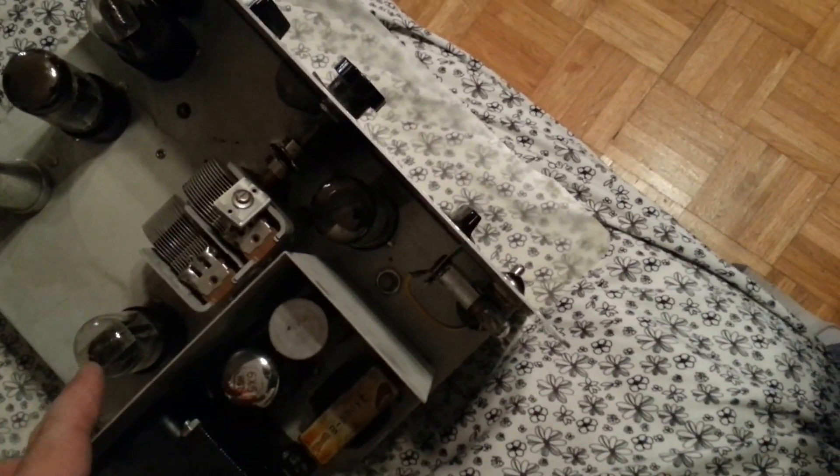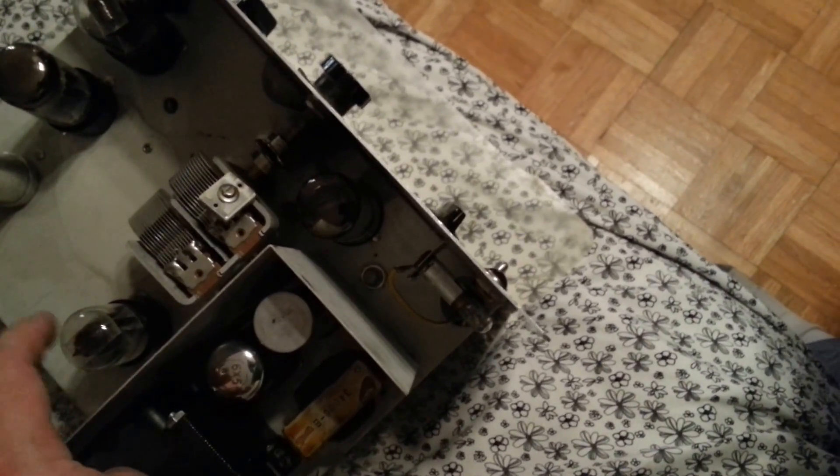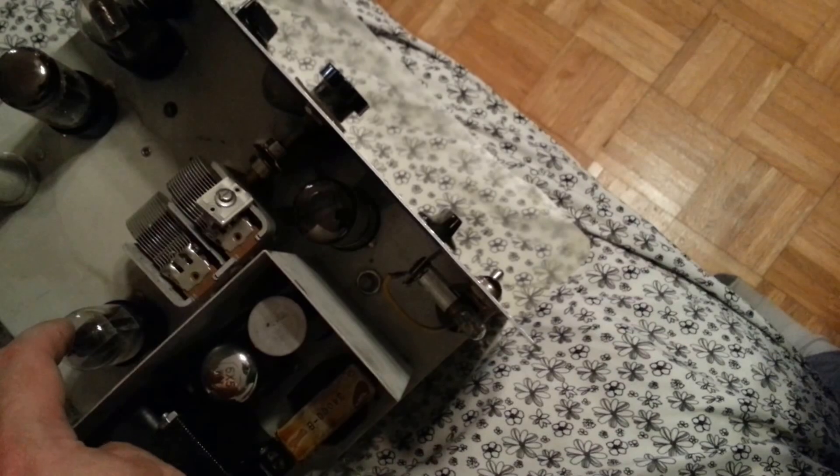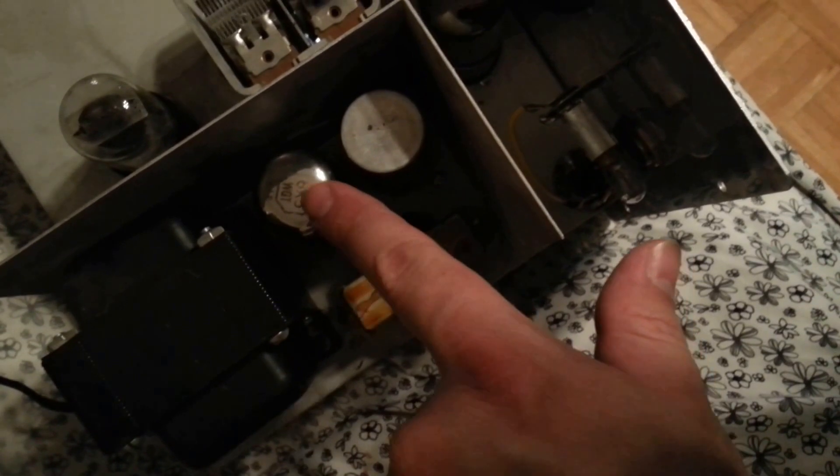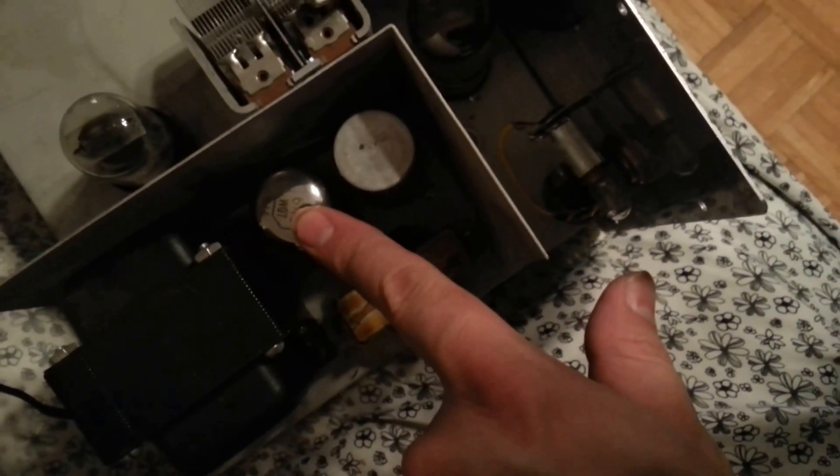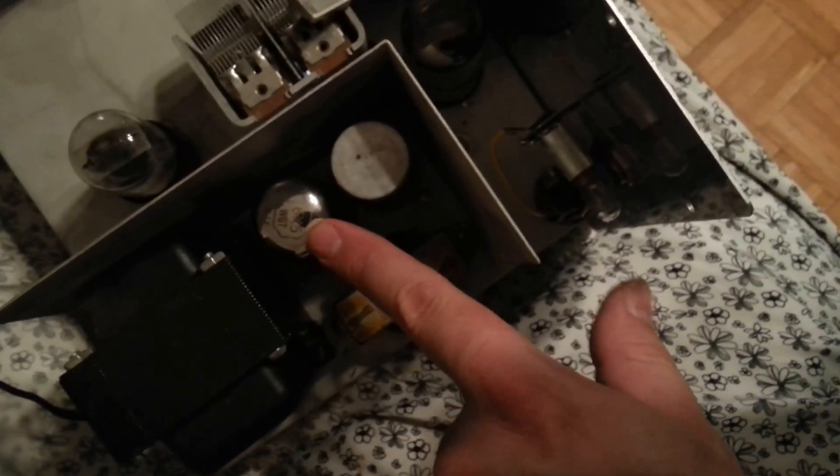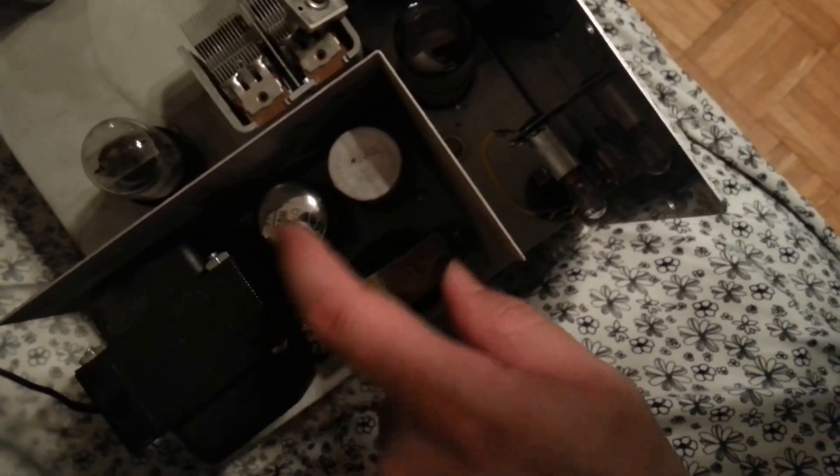This tube here is the pre-amplifier. This is a 6J6. I'm going to replace this tube later on because as you can see this thing has a good amount of filament boil off. This 6X5WGT rectifier is also new. This is an industrial grade 6X5 which is highly recommended for anyone who has an instrument or anything else that uses a 6X5.